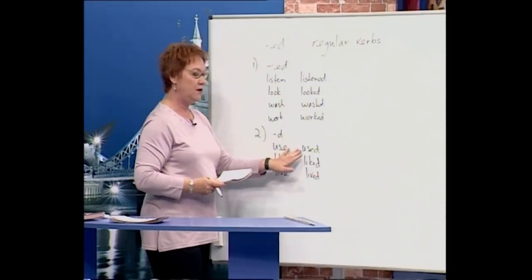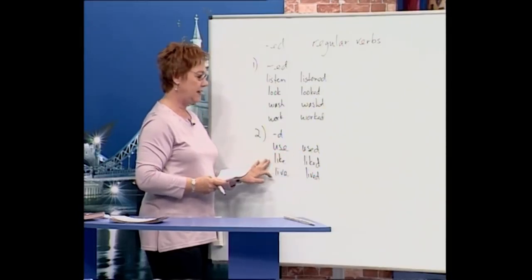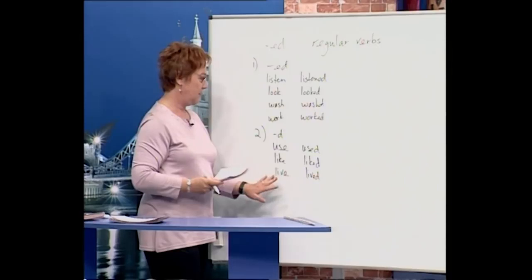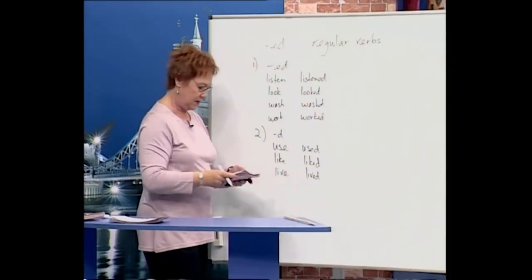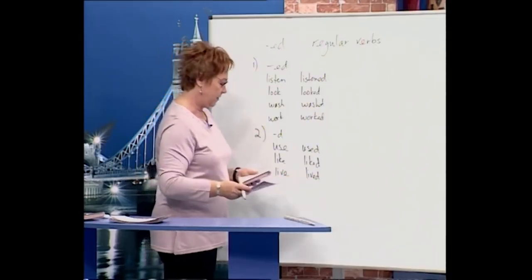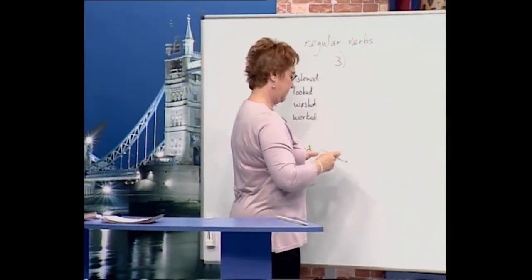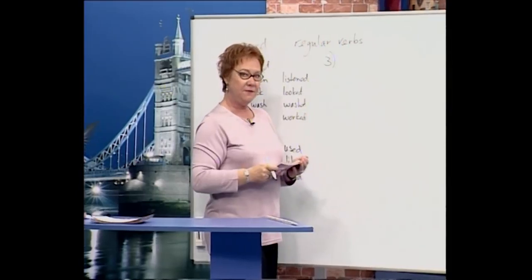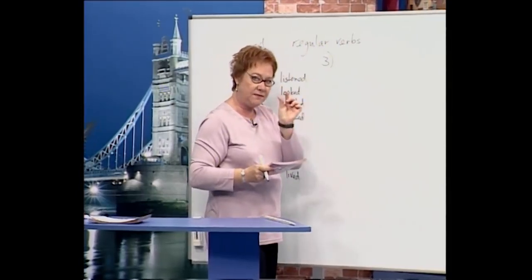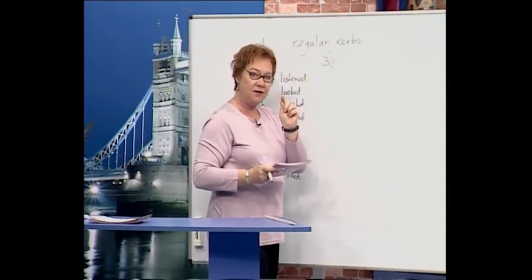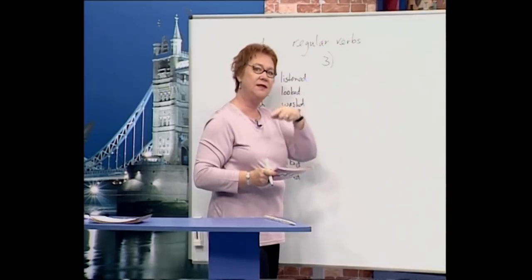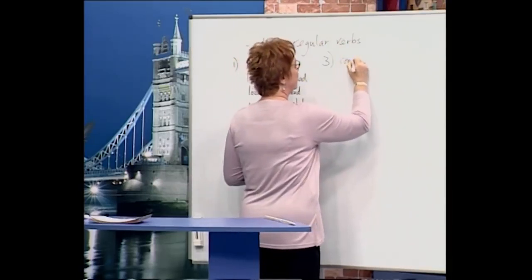Now the third group is this: some verbs are very short, they end in a consonant. We have to make two consonants and then -ed, so consonant plus -ed.